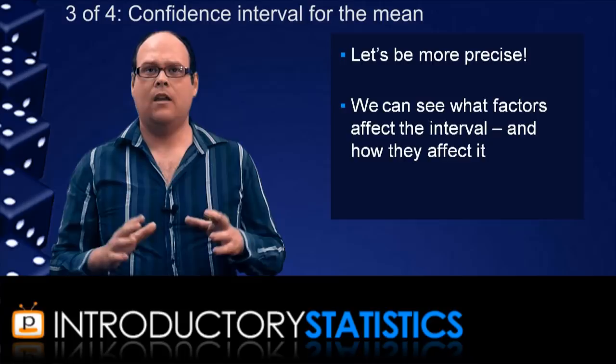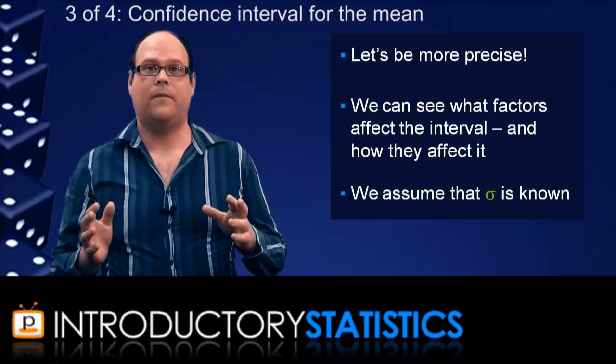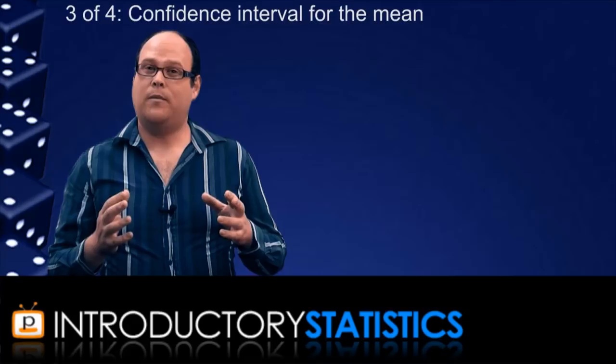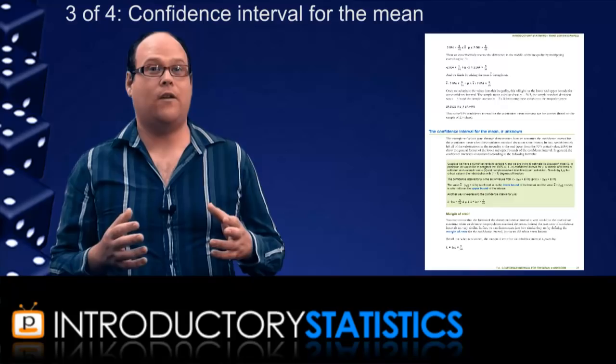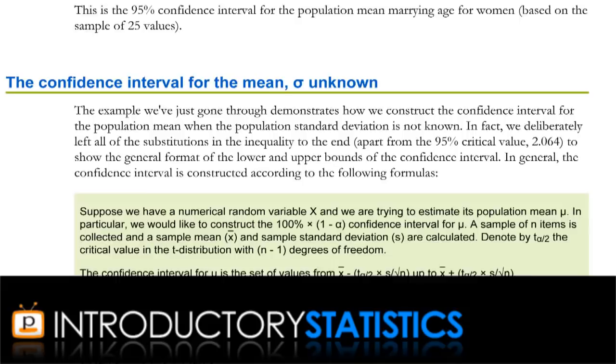Like we've been doing with the TV example, we're going to assume that we know the population standard deviation sigma. We've been assuming that it's 10 hours. Now, the assumption that we know sigma is not terribly realistic, but for the purposes of this summary video, it will do. In the Pedisco introductory statistics textbook, we do go into great detail about what to do when we don't assume that sigma is known. So go there if you want to learn more about that.